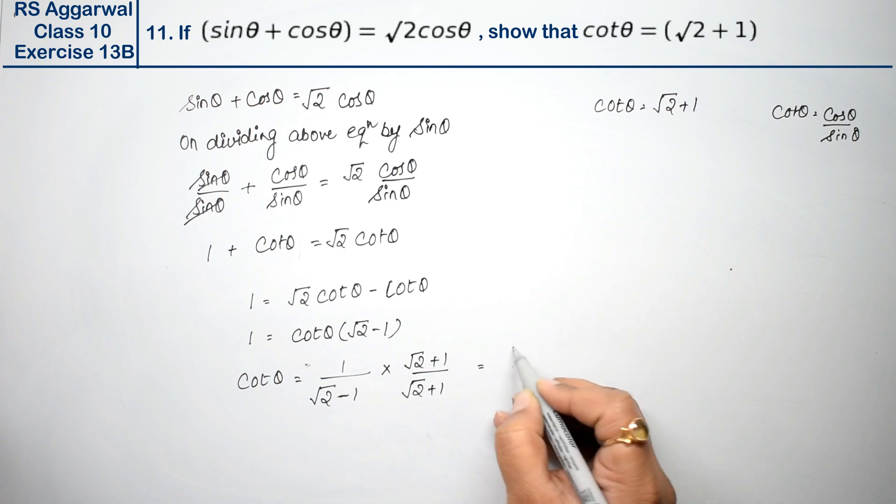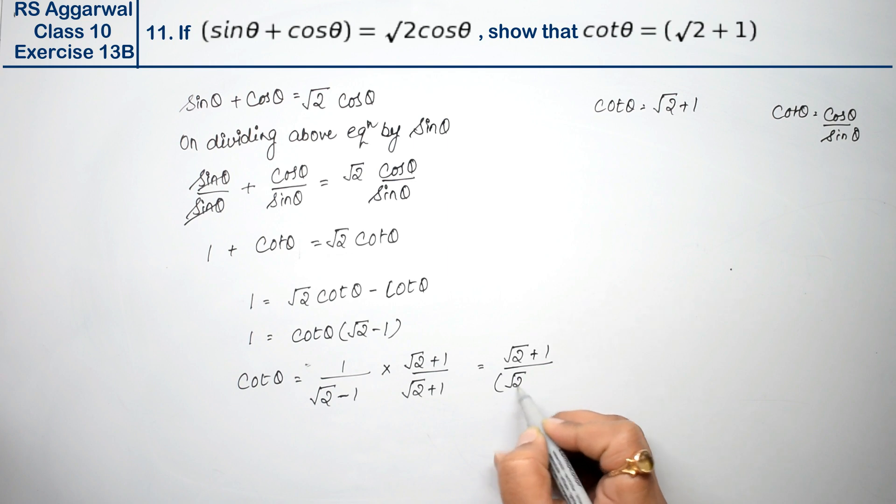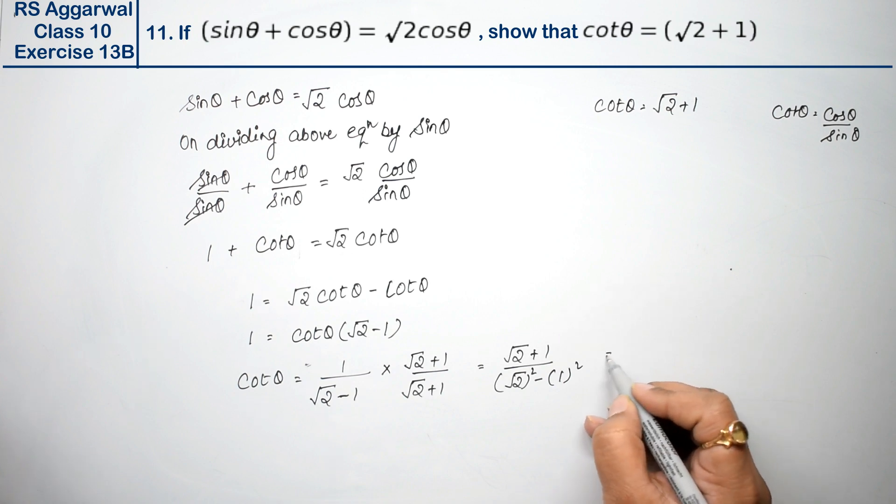So root 2 plus 1 on top, and root 2 square minus 1 square on bottom, because a minus b times a plus b equals a square minus b square.